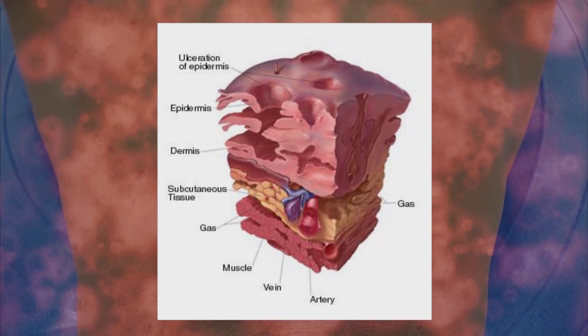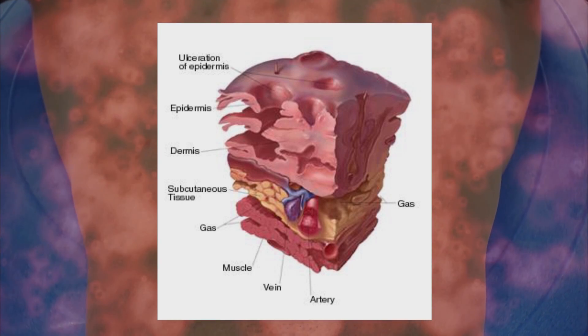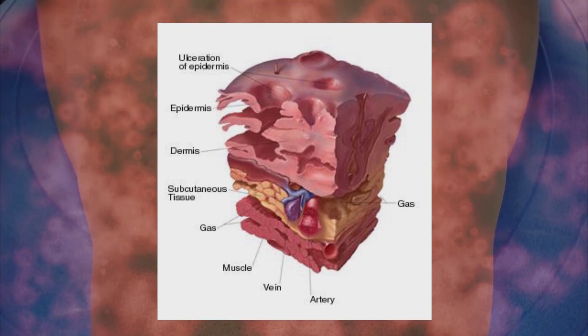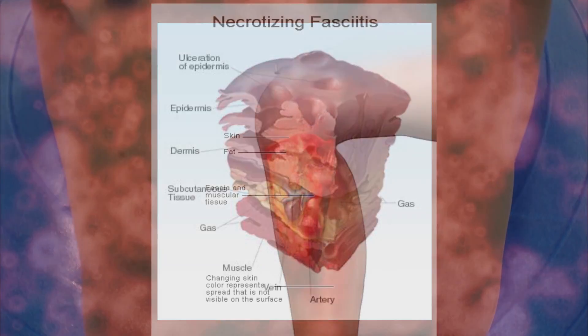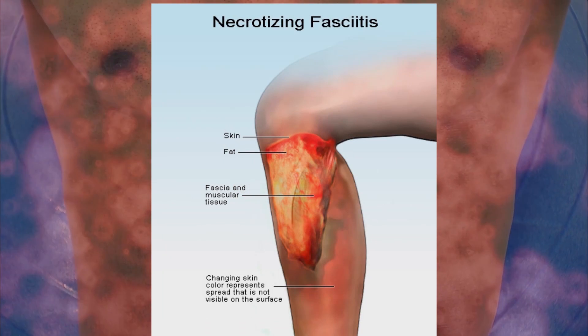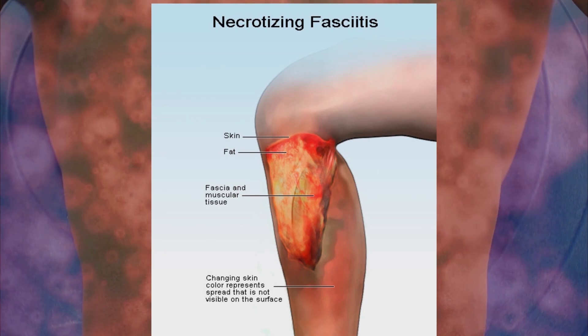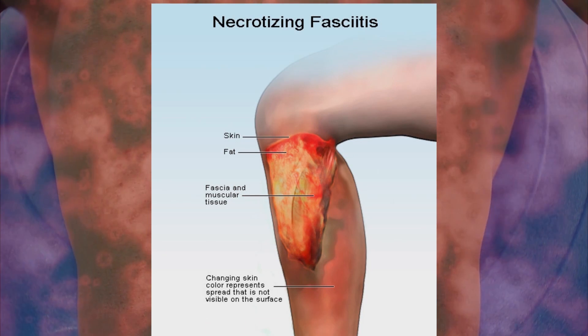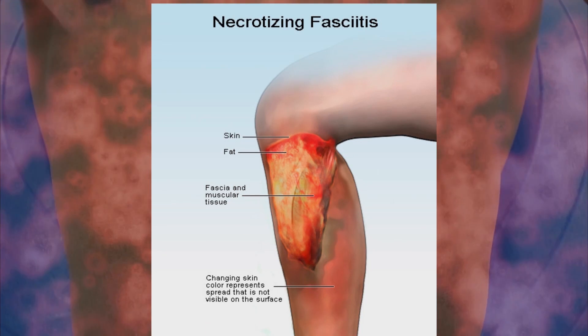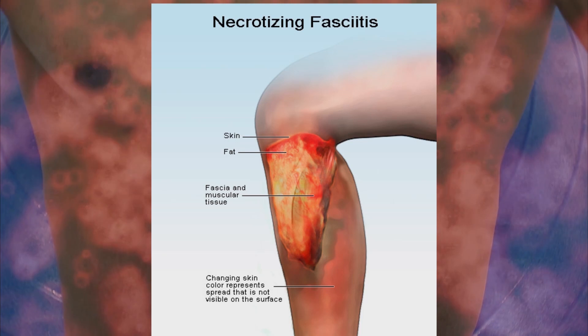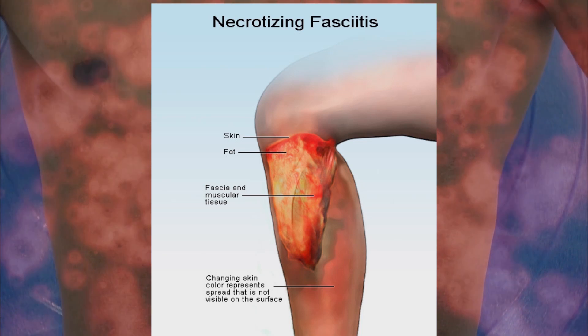Initially, you'll see redness, swelling, maybe drainage from the wound site. And as it progresses, you could see a darkening at the center of the wound where the tissue is necrotic, or dying.